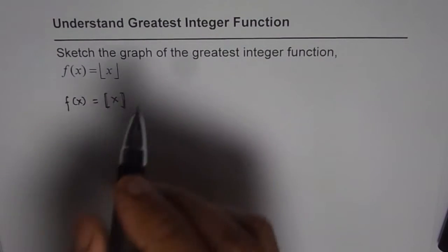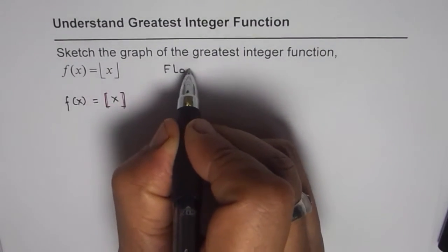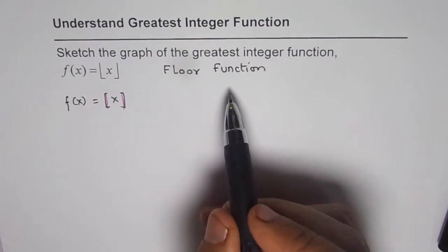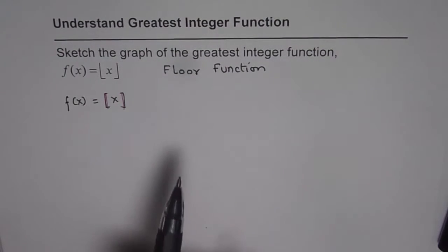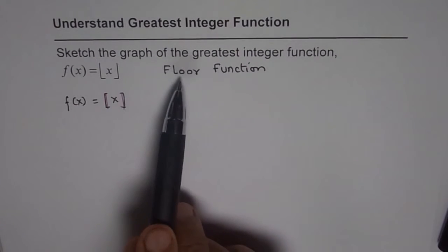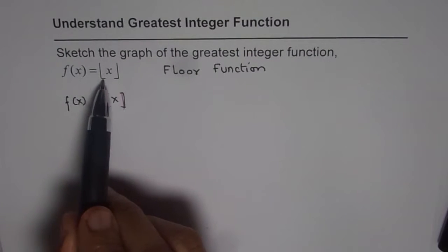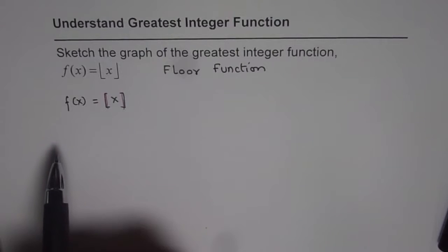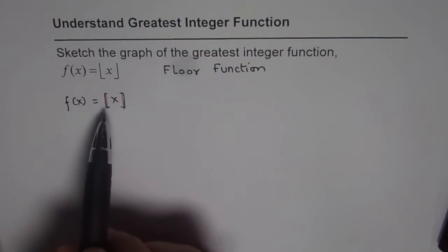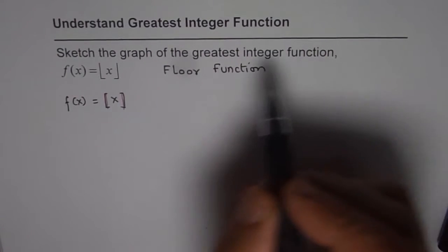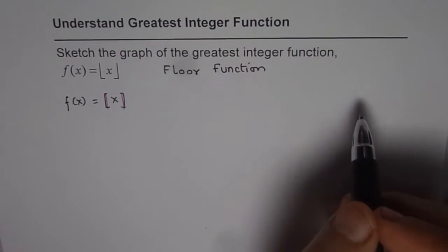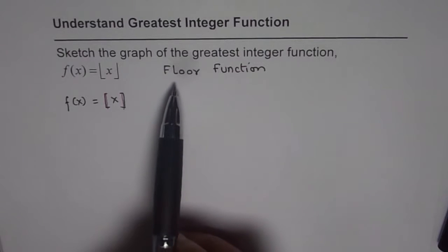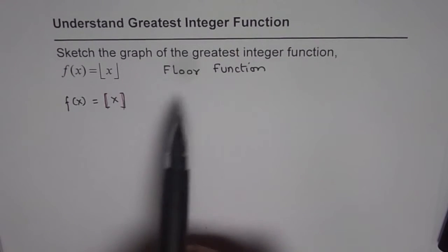Another name for this function is the floor function. Literally, floor means the bottommost part, and you will understand soon from the definition why it is called the floor function — because we have bars on the floor side. We do have another function called the ceiling function, which we will discuss in another video, where we write it with bars on the top side.